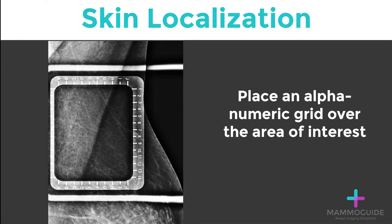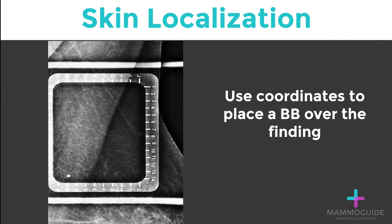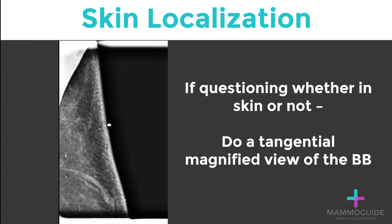How this procedure works is you place the patient in compression with an alphanumeric grid over the area of interest. Next, you use the coordinates to place a BB sticker over the finding. If you're questioning whether or not the calcifications are in the skin, simply do a tangential magnified view of the BB. On this view, you can see that the calcifications are superficial right within the skin — you know these are skin calcifications and nothing to worry about.